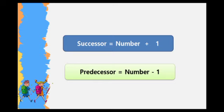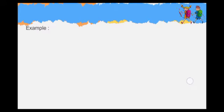Predecessor is a number obtained by subtracting 1 from the given number. Predecessor equals number minus 1.